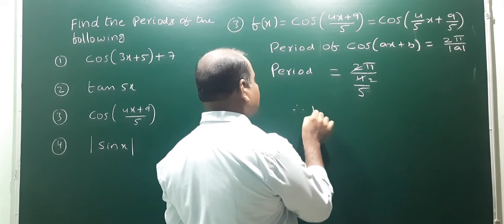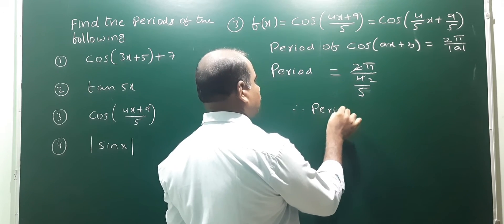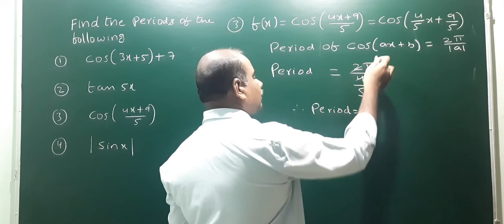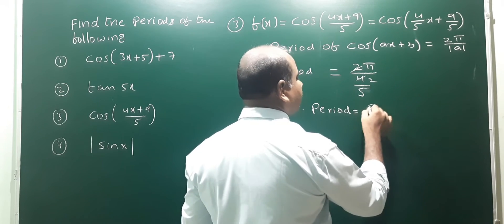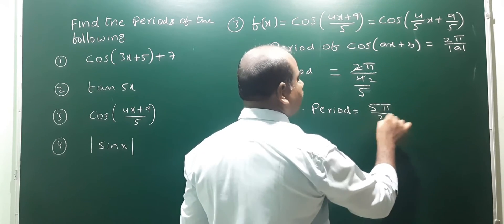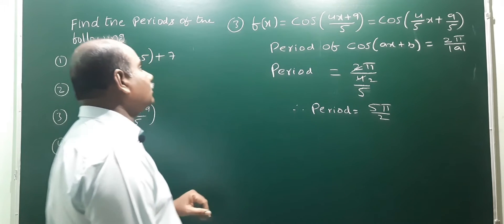Therefore, the final period equals 2π divided by (4/5). The 5 goes to the numerator, so it becomes 5π/2. That is the answer for the third one.